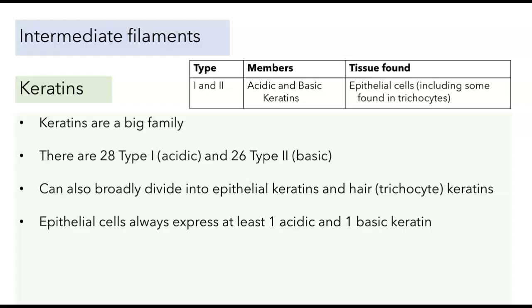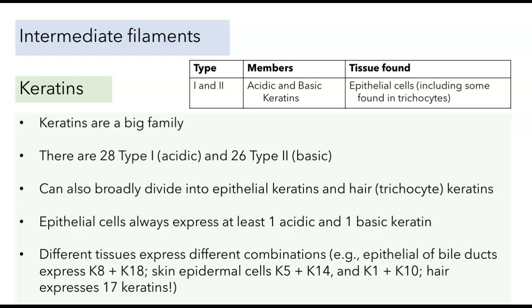Epithelial cells, including trichocytes, always express at least one acidic and one basic keratin, but different tissues express different combinations. For example, epithelial cells lining the bile ducts — which are pretty protected and don't see a great deal of mechanical stress — express K8 and K18. Skin epidermal cells will express K5 and K14, but also add in K1 and K10. Hair expresses 17 different keratins. There's a general rule that the harder the structure, the more different types of keratins are expressed, which gives us a clue to the function of these intermediate filaments: to withstand mechanical forces.